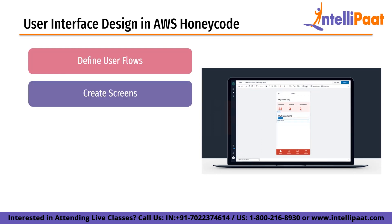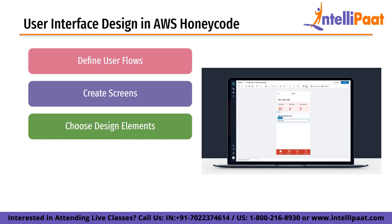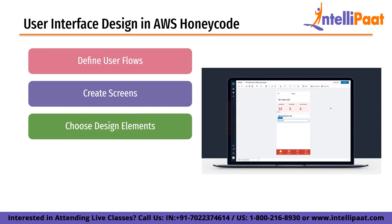Next is creating screens. After defining the user flows, the next step is to create screens for each step in the flow. Each screen should be designed to support the user task and should be easy to navigate. Screens can include input fields, buttons and other controls that users interact with. Third is choosing design elements. Once the screens are created, the next step is to choose design elements that will make the UI visually appealing and easy to use. This can include color schemes, fonts, icons and other visual elements. Design elements should be consistent across the app to create a cohesive user experience.